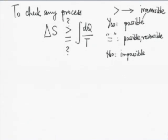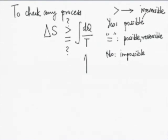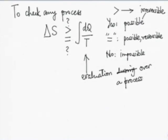Thermodynamics says it is a possible reversible process, but as good engineers, we should realize that a reversible process is extremely difficult to execute, even at extreme cost. This requires evaluation during or over a process. If we study the process in detail and find out whenever heat is transferred across the boundary, what is the temperature — the question is, how does one evaluate ΔS?